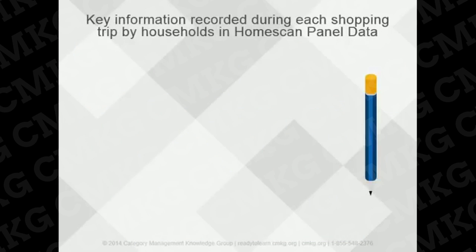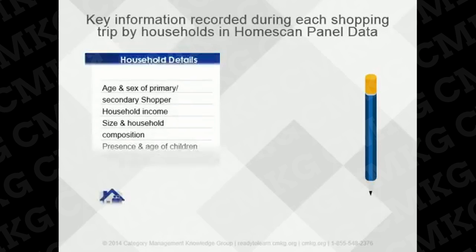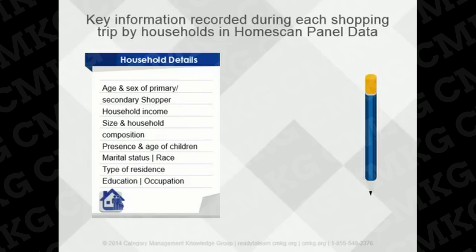Each household in the HomeScan panel provides detailed information about their household, including age and sex of primary and secondary shopper, household income range, size, composition, presence, and age of children. Marital status, type of residence, race, and male and female heads of household also report age range, birth date, hours employed, education, and occupation.